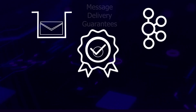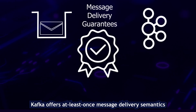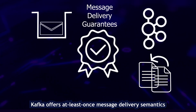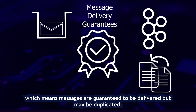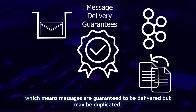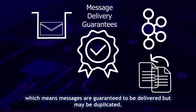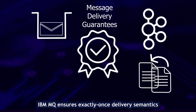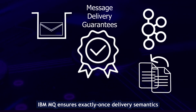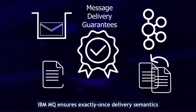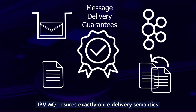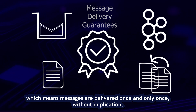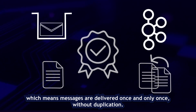Message delivery guarantees: Kafka offers at-least-once message delivery semantics, which means messages are guaranteed to be delivered but may be duplicated. IBM MQ ensures exactly-once delivery semantics, which means messages are delivered once and only once, without duplication.